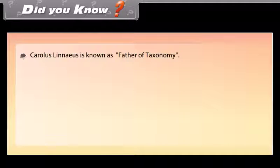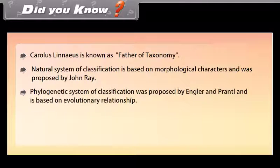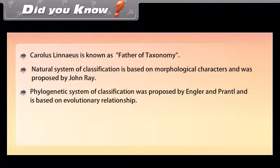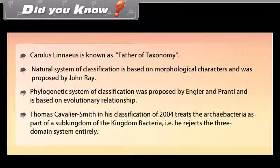Did You Know? Carolus Linnaeus is known as the father of taxonomy. The natural system of classification is based on morphological characters and was proposed by John Ray. The phylogenetic system of classification was proposed by Engler and Prantl and is based on evolutionary relationship. Thomas Cavalier-Smith, in his classification of 2004, treats the archaeobacteria as part of a sub-kingdom of the kingdom Bacteria, rejecting the three-domain system entirely.